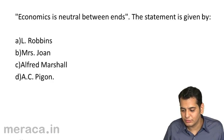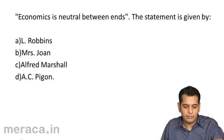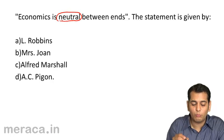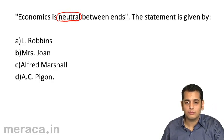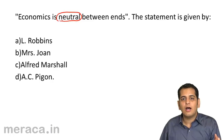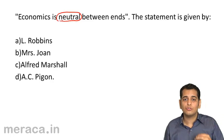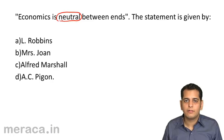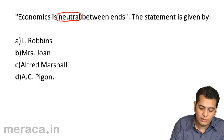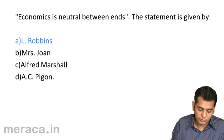Economics is neutral between ends. This statement was given by whom? The word neutral means the ends are independent — they are not affected by which resource you use to satisfy them. Who said that economics is a science of ends and means? It was Professor Lionel Robbins.